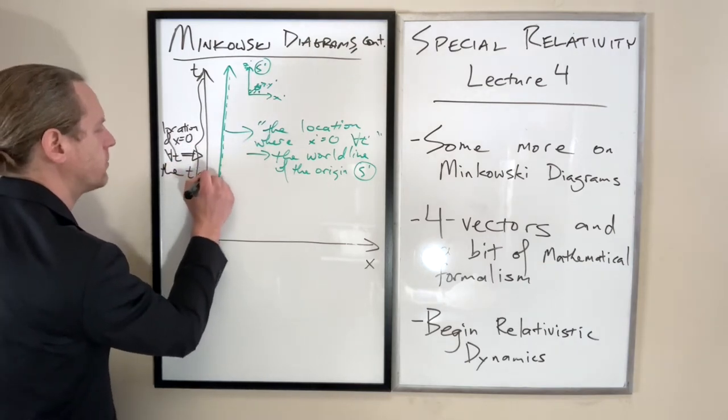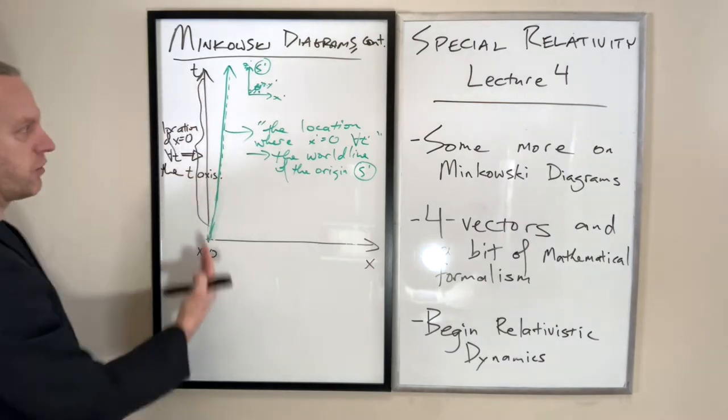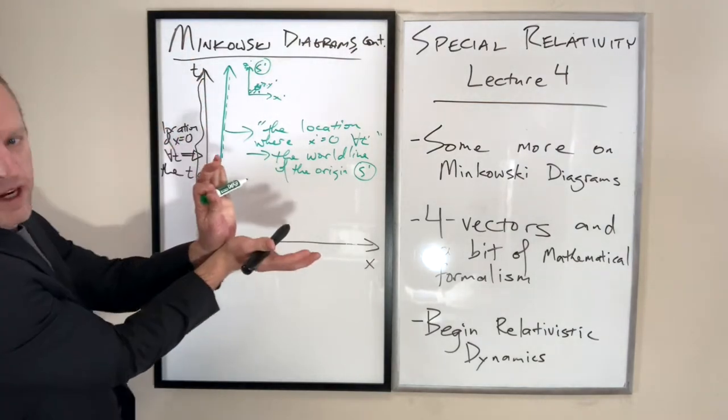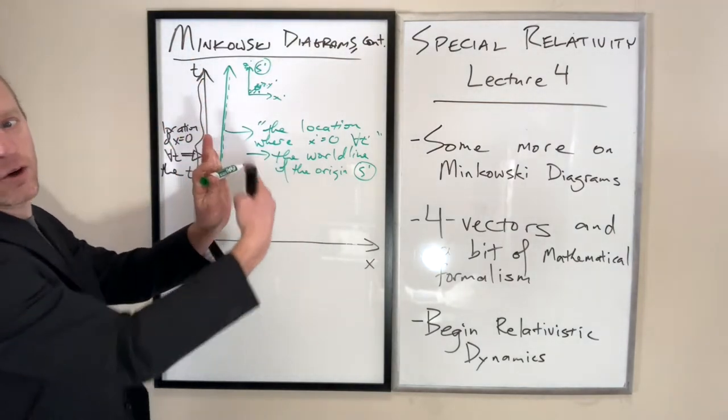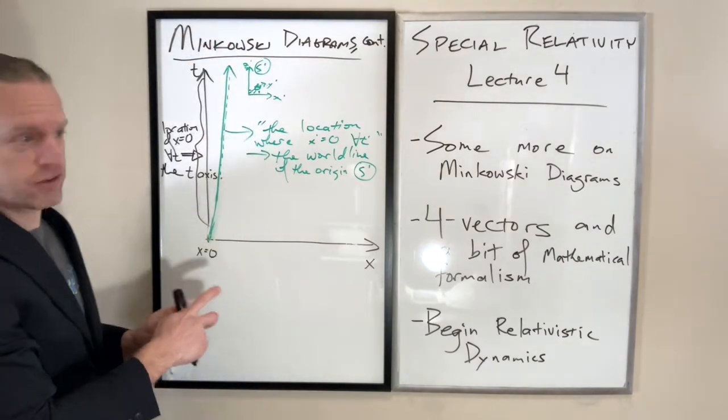The t-axis, because that's the variable we're measuring along that axis. If you have y and x, the location where x equals zero at all times is, by definition, the y-axis.